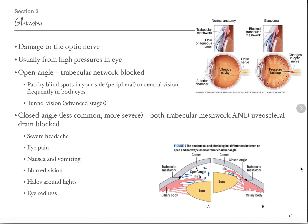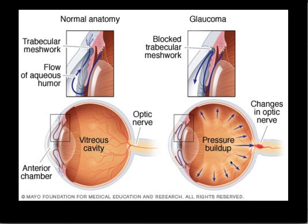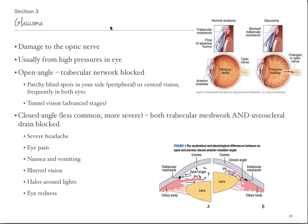Next, we're going to talk about glaucoma. Glaucoma is an increase in IOP — intraocular pressure — and when you have an increase in intraocular pressure, it damages the optic nerve. This picture shows this pressure buildup, which causes damage to the optic nerve. Eventually that can cause blindness, which is why we treat glaucoma.